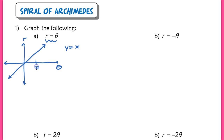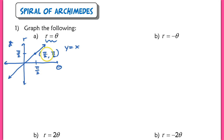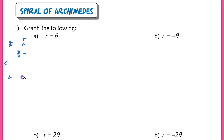What this is saying is that as theta increases, r increases. If we plug in theta equals pi over 2, then r is also pi over 2, giving us the coordinate (pi/2, pi/2). It's not wrong to graph a reference graph like this — it just doesn't really help us unless we find specific points. So instead, we're just going to jump right to the polar form.